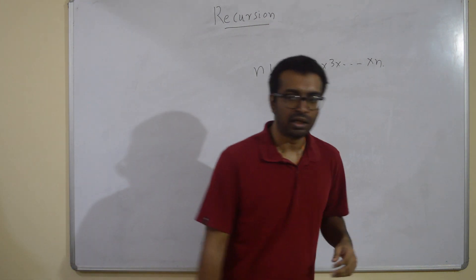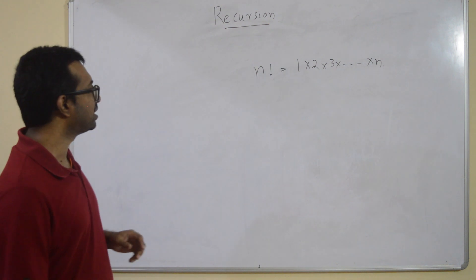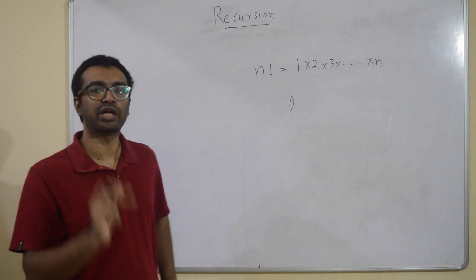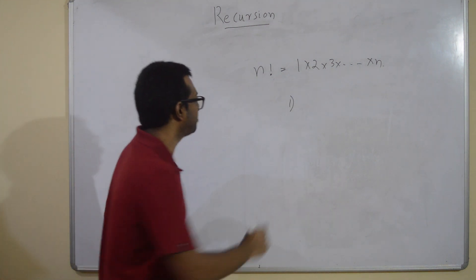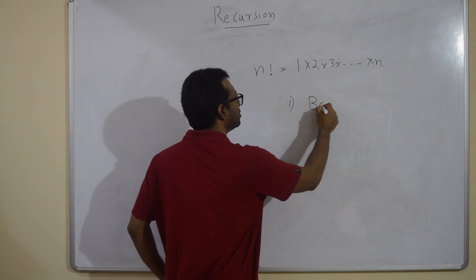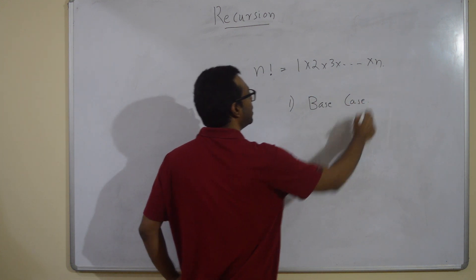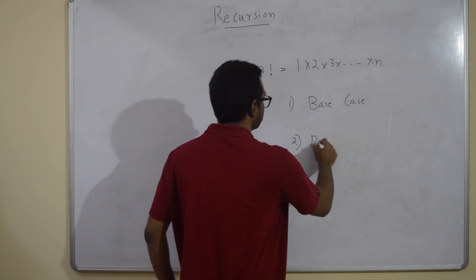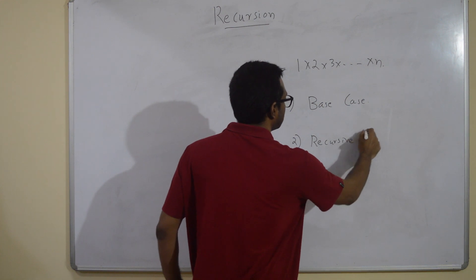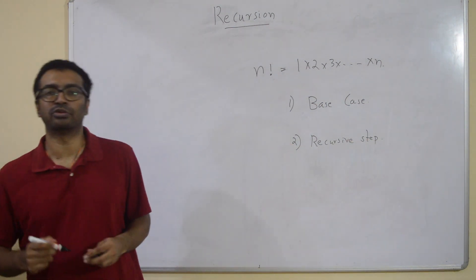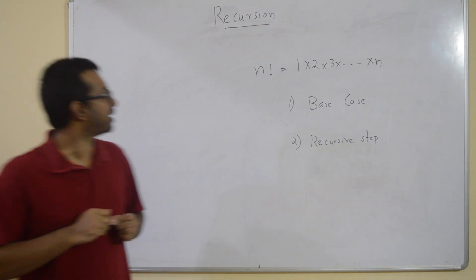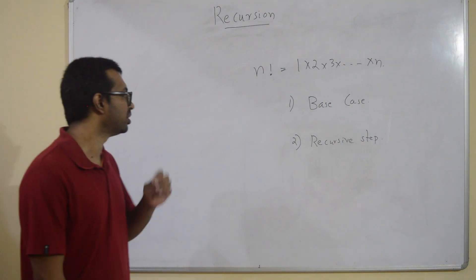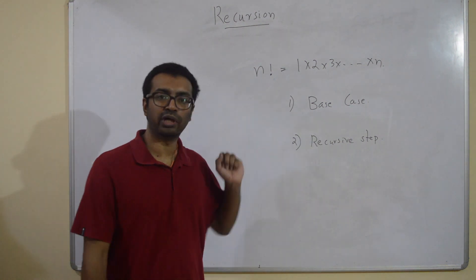A recursive function consists of two parts. Whenever you write a recursive function it should have two parts: the first part is the base case, and the second part is the recursive step. Every recursive function you write should have both these parts — if either one is missing, something is wrong.